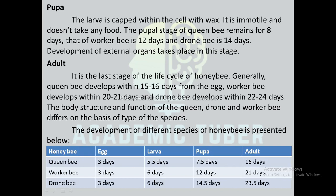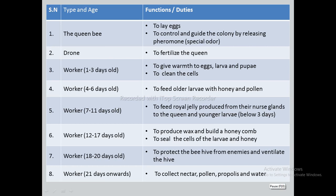Development stages summary: Queen bee — egg 3 days, larva 5.5 days, pupa 7.5 days, adult at 16 days. Worker bee — egg 3 days, larva 6 days, pupa 12 days, adult at 21 days. Drone bee — egg 3 days, larva 6 days, pupa 14.5 days, adult at 23 days.